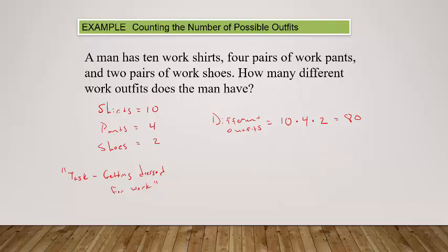This man has eighty different work outfits, because a work outfit with a green shirt, black pants, and brown shoes is different from green shirt, black pants, black shoes. That's why these numbers get so big.